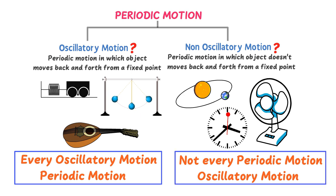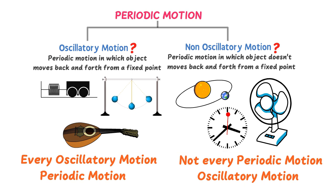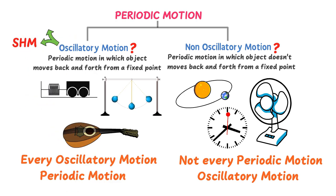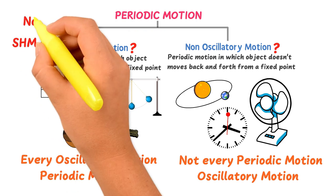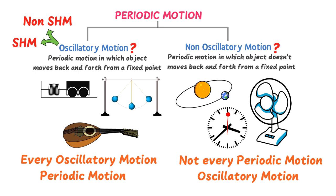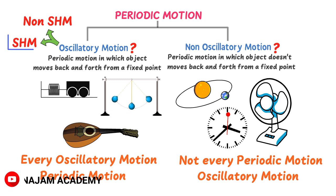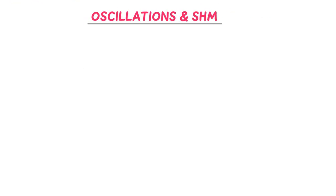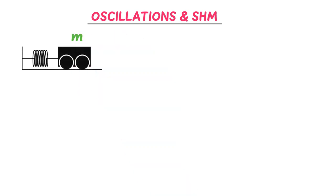Remember: every oscillatory motion is periodic motion, but not every periodic motion is oscillatory motion. Now, oscillatory motion is divided into two types: SHM, or simple harmonic motion, and non-SHM, or non-simple harmonic motion. We will first understand SHM, and finally as a bonus tip I will give you an example of non-SHM. Let's consider a mass m attached to an elastic spring.